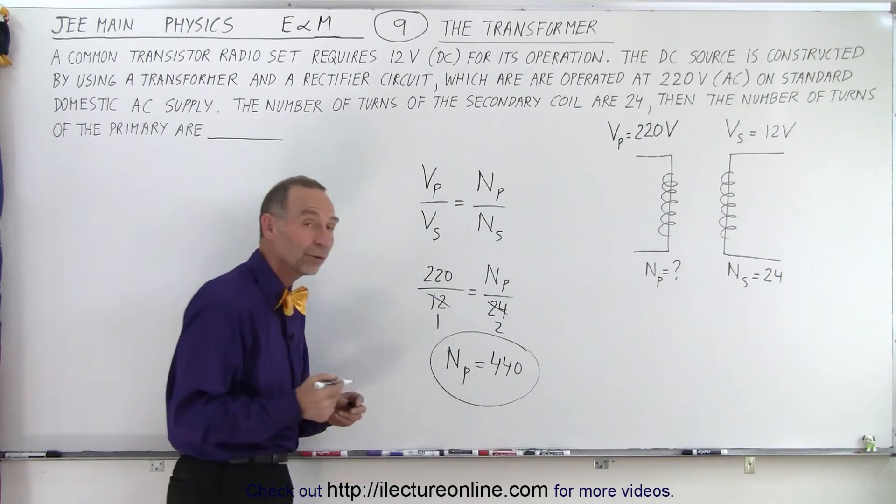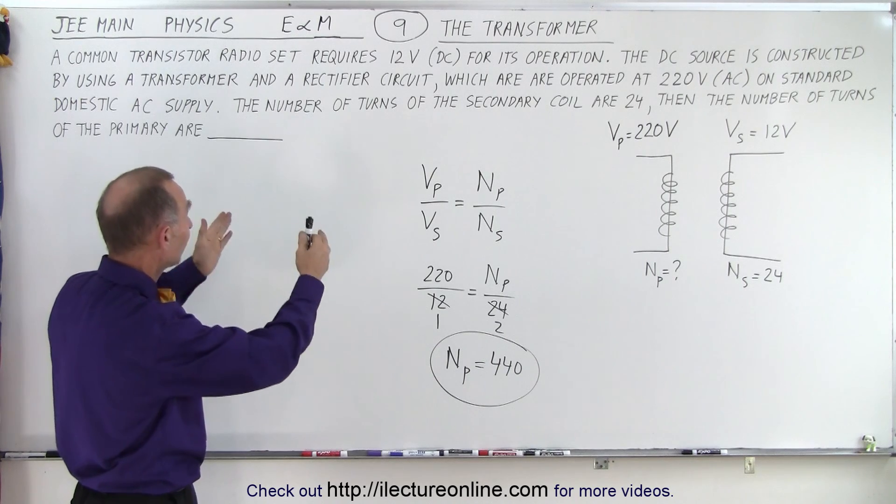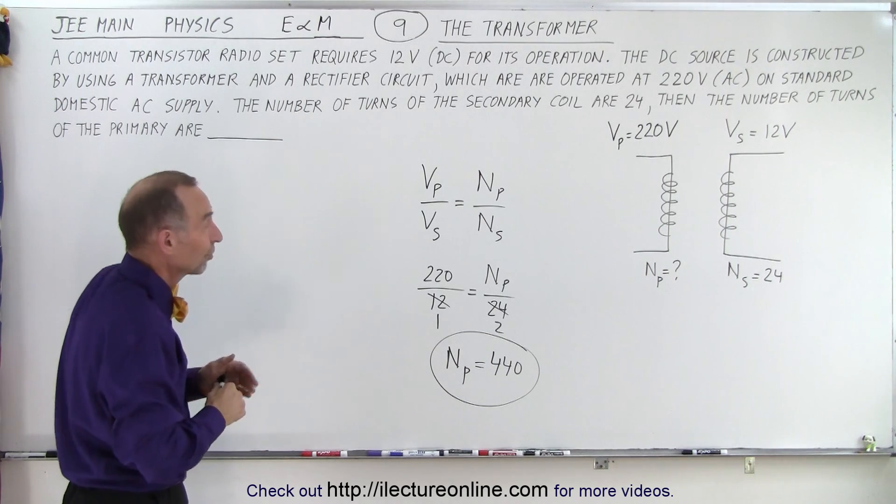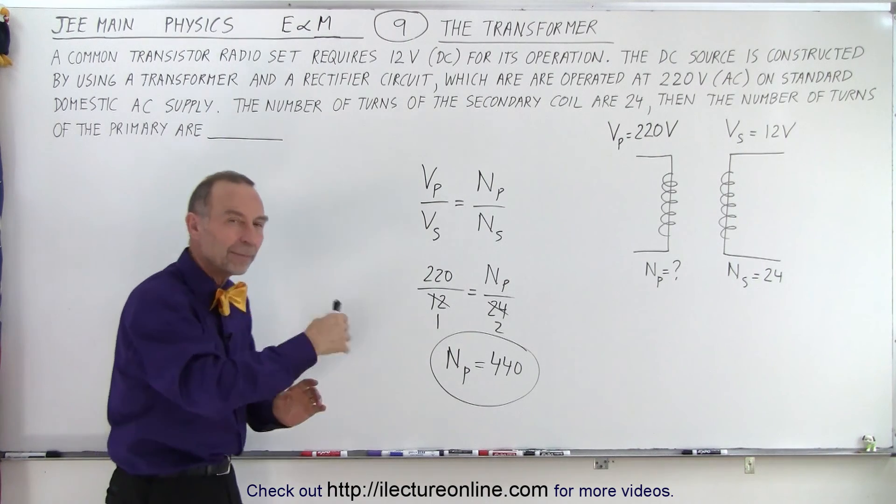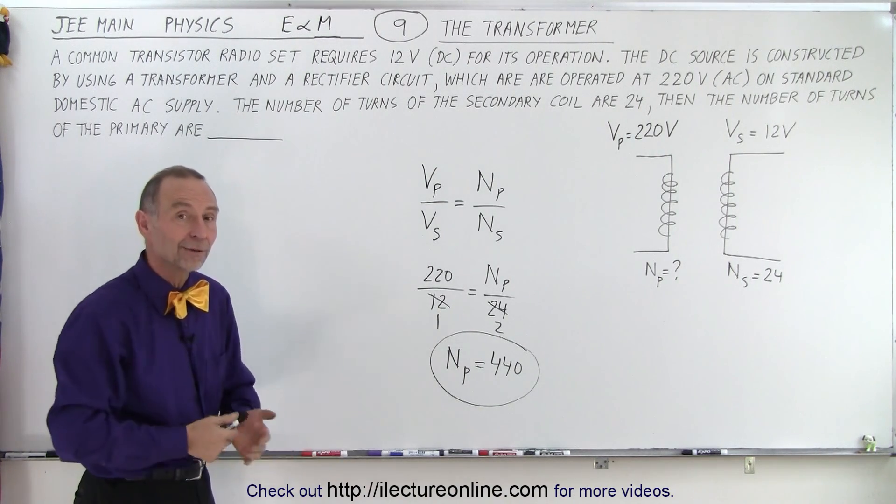And really that's all there is to it to solving this problem. The fact that we're converting from an AC circuit to a DC circuit because we're needing 12 volts DC is really not relevant to the step-down function of the transformer. And so that is therefore the solution.